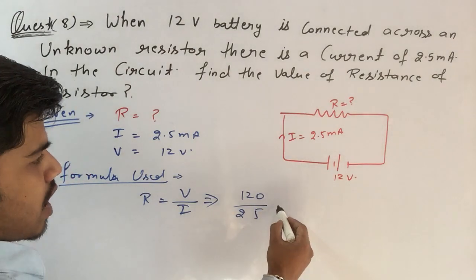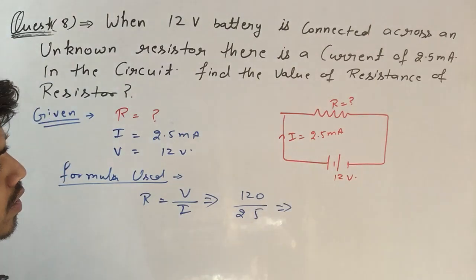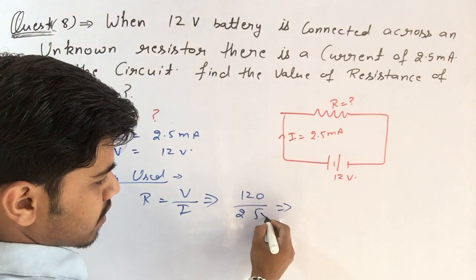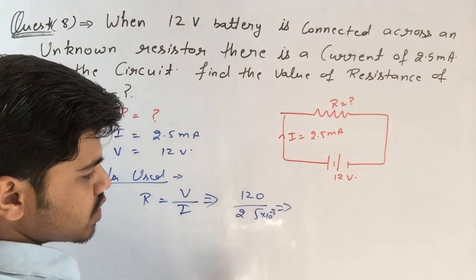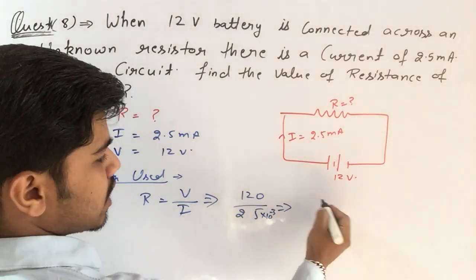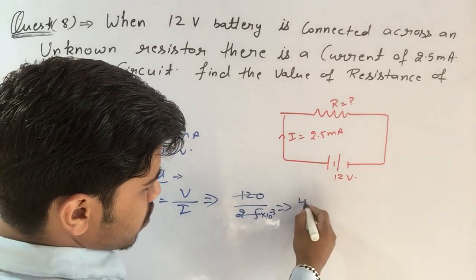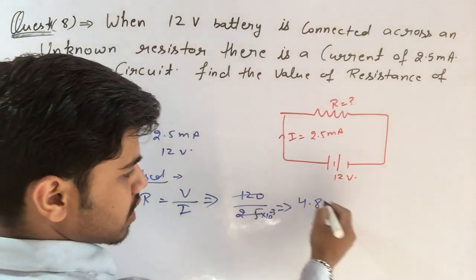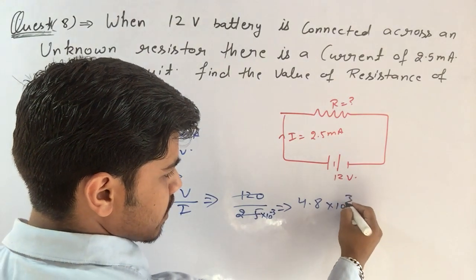After calculating, this is milliamperes, milliamperes into 10 to the power minus 3. So after calculating, we have 4.8 times 10 to the power 3 ohms.